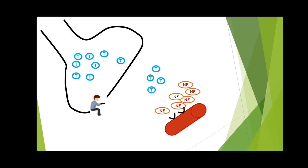Please do not confuse tachyphylaxis with acquired tolerance. Acquired tolerance involves induction of enzymes and occurs after six months or one year. In tachyphylaxis, within one week or two weeks tolerance will develop — because there is no more store of norepinephrine available to produce the action. That is known as tachyphylaxis, and this completes our tolerance topic.